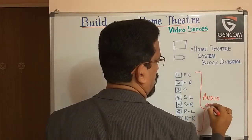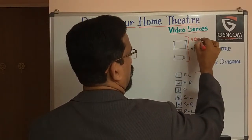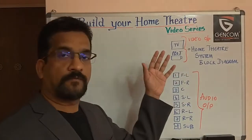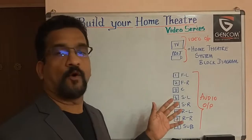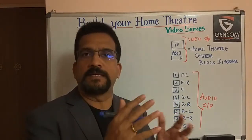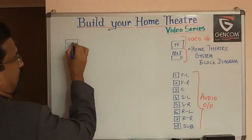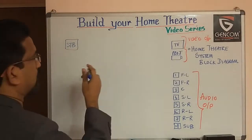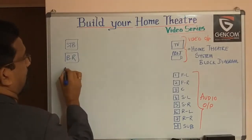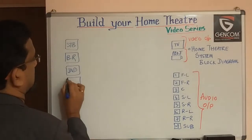These are the audio outputs and this is the video output. Now let us consider the input part — the signal sources. One is the set-top box, from where you get the cable connections. Then you have a Blu-ray player, a DVD player, and some other source.